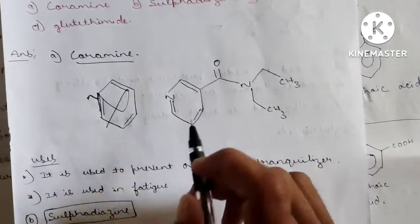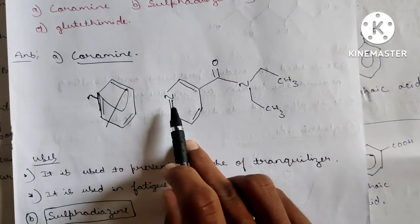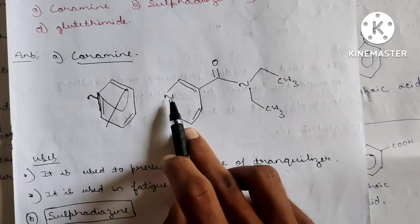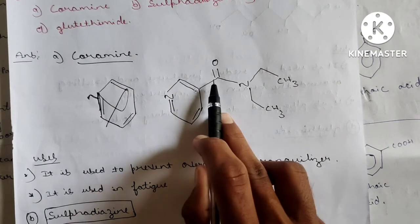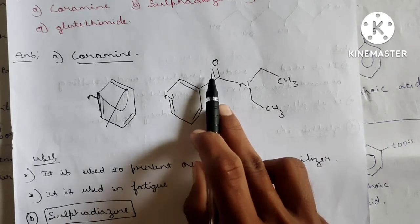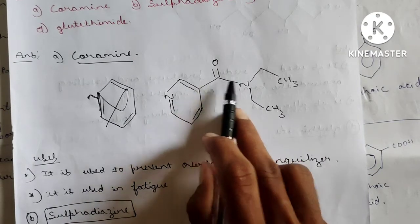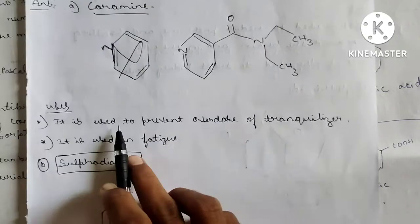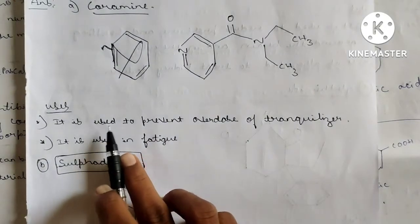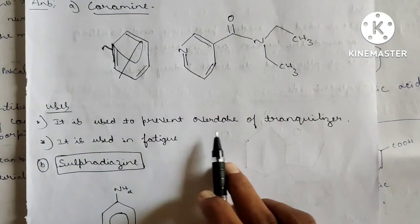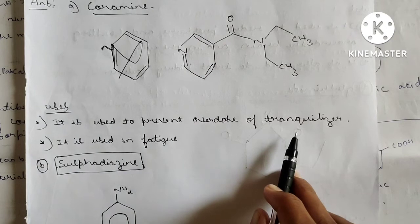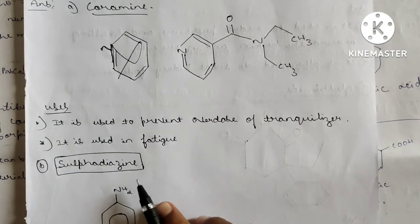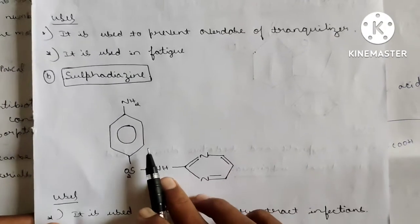Coramine: In the benzene ring there is a nitrogen with a double bond and an ester bond — you have to practice this complex structure. Coramine is used to prevent overdose of tranquilizers and is used to treat fatigue.